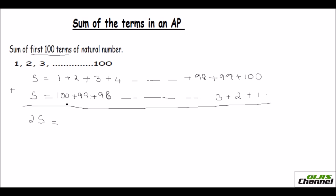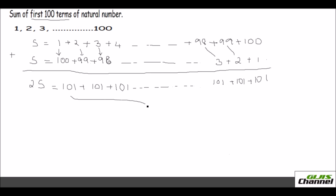So 2S equals: 1 plus 100 gives 101, then 2 plus 99 is again 101, then 3 plus 98 is again 101. Likewise we keep getting 101 all the way till the end — 98 plus 3 is 101, 99 plus 2 is 101, and 100 plus 1 is 101. So we get 101 repeated 100 times, because we have taken 100 terms.